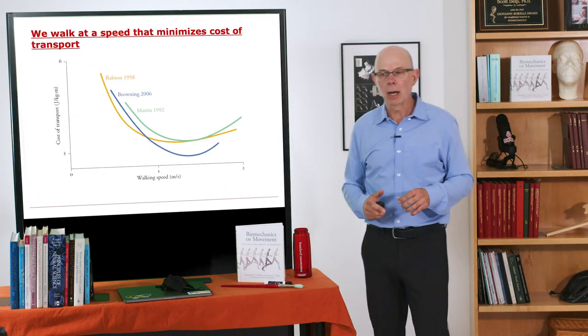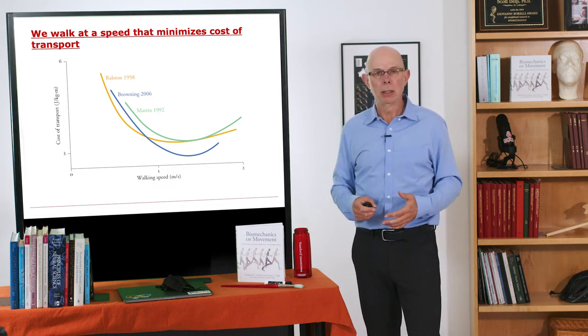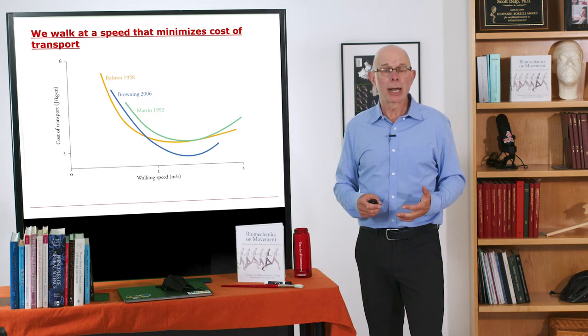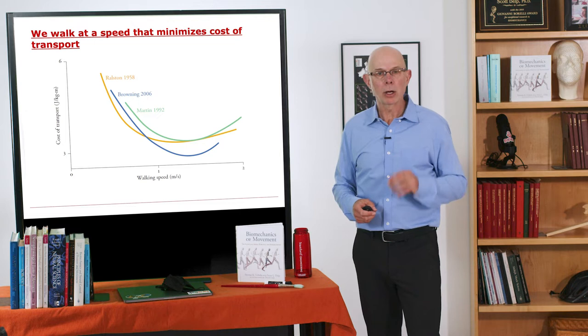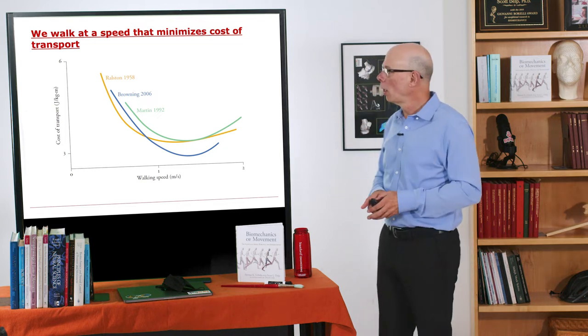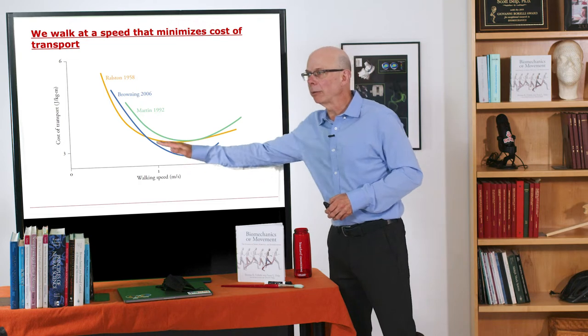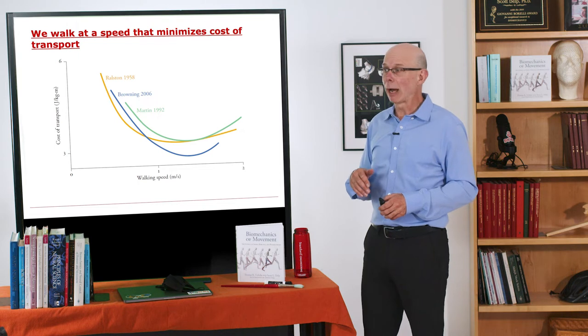We ended last time on a key principle, and that is we walk at a speed that minimizes our energetic cost per distance traveled. These energetic costs are an important driver of gait transitions. We want to be down here at the minimum, burning the minimum energy per distance traveled.